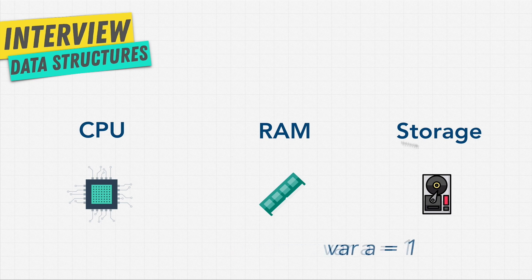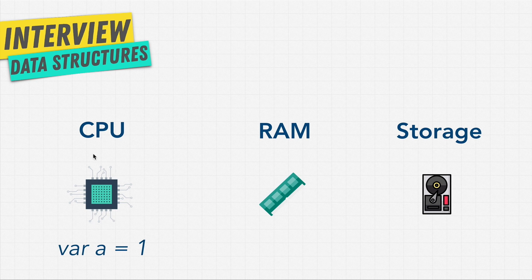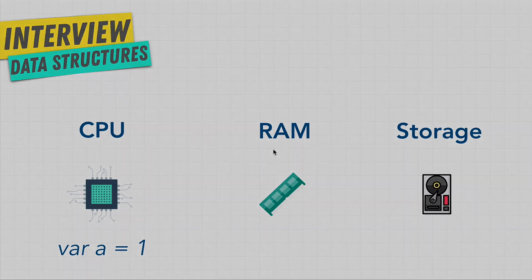Once we turn off or close Google Chrome, we want to be able to reopen it. That's what we do when we save an application on our computer — we save it to storage. So the next time we open up Google Chrome, the CPU is going to grab the program from storage so it can use it again. And for Google Chrome to run fast and run smaller scripts, it keeps that information in Random Access Memory.